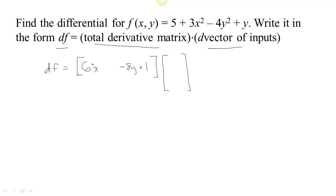Since this is the rate of change with respect to x, it should get multiplied by the change in x. Since this is the rate of change with respect to y, we take the slope in the y direction times the change in y, and together those two give us the change in the output.